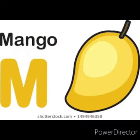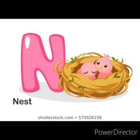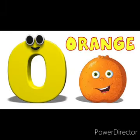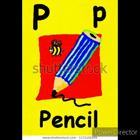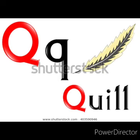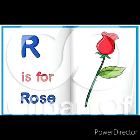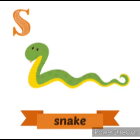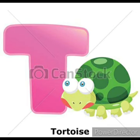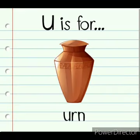K for king, L for lion, M for mango, N for nest, O for orange, P for pencil, Q for quail, R for rose, S for snake, T for tortoise, U for umbrella.